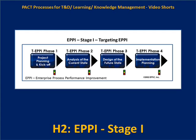In Stage One we're simply trying to determine what the current state's situation is, where we're trying to get to in the future, what the gaps are, and what are the implementation steps that we must plan for and resource in order to make it happen — in order to get from here to there, from the current state to the future state.